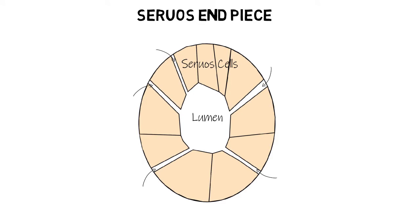The lumen of the serous end piece has small finger-like extensions that extend between adjacent cells. These extensions are known as the intercellular canaliculi, as they are found between adjacent cells but still located outside the cells. These intercellular canaliculi serve to increase the surface area of the lumen.